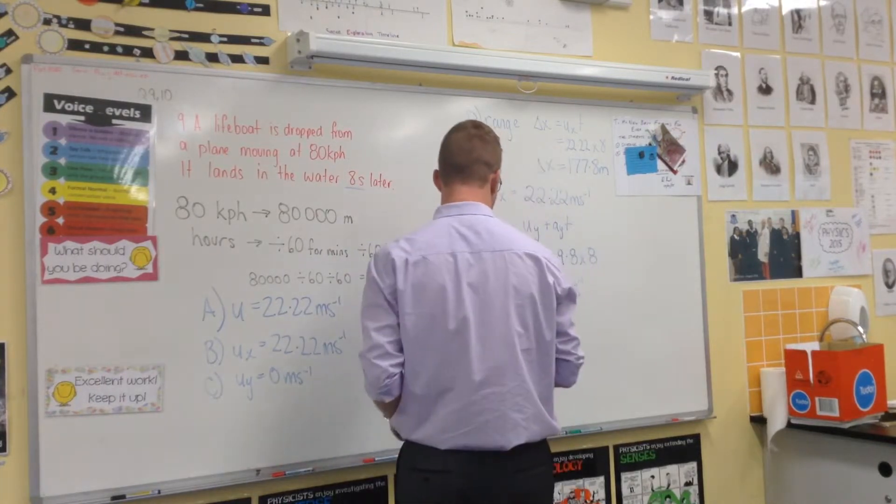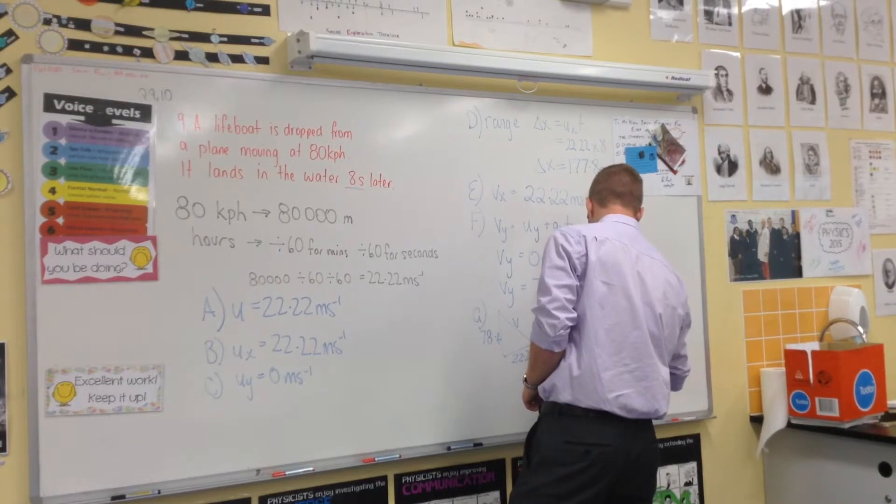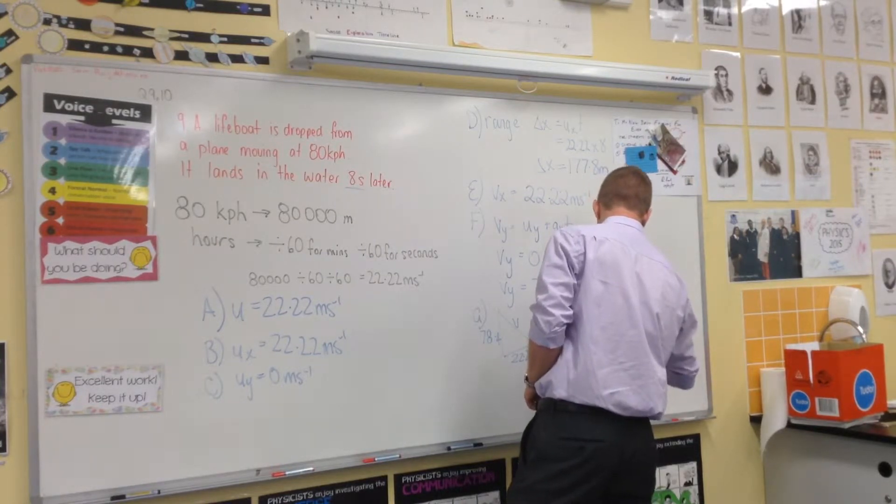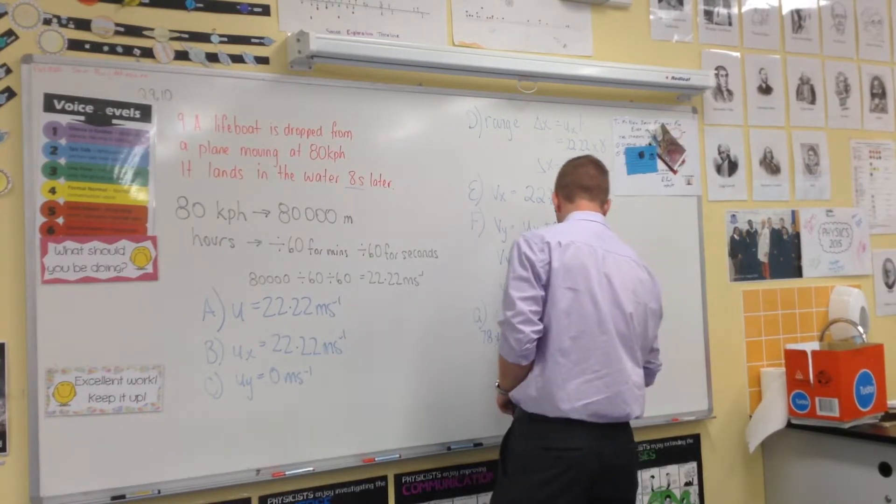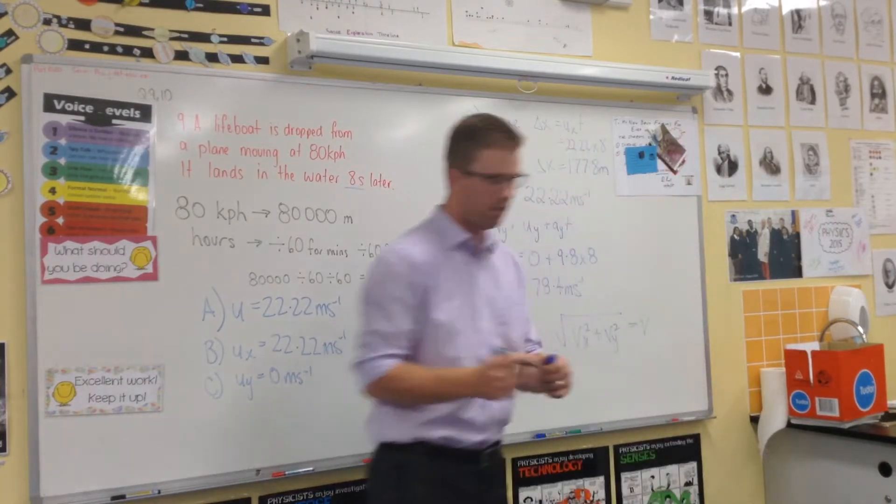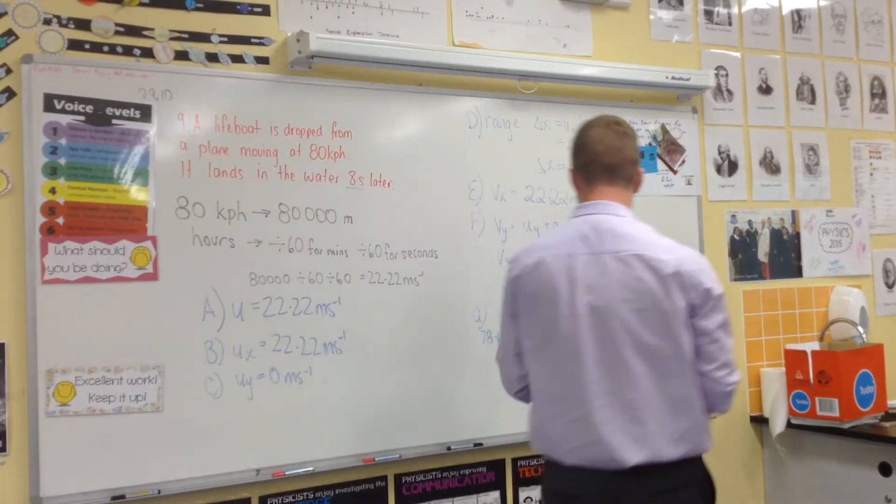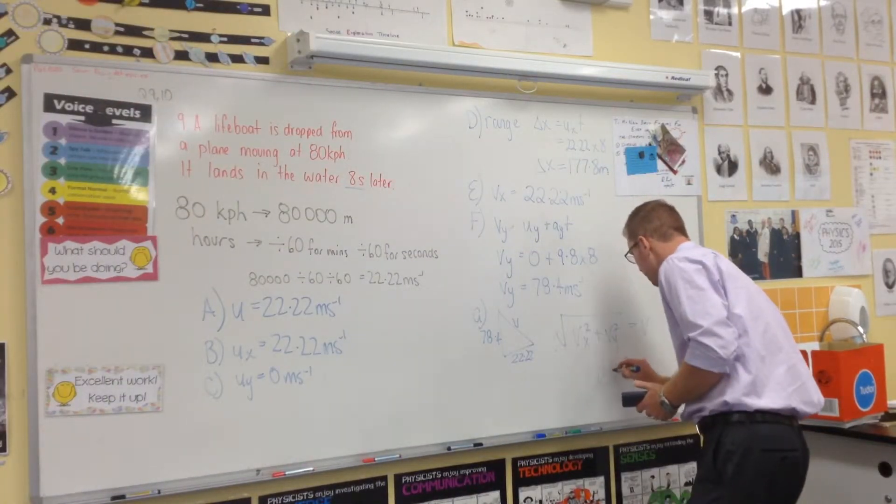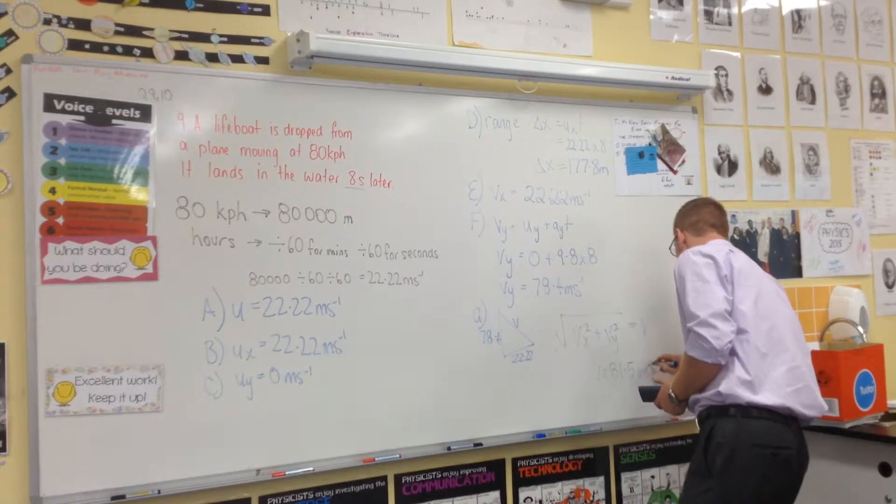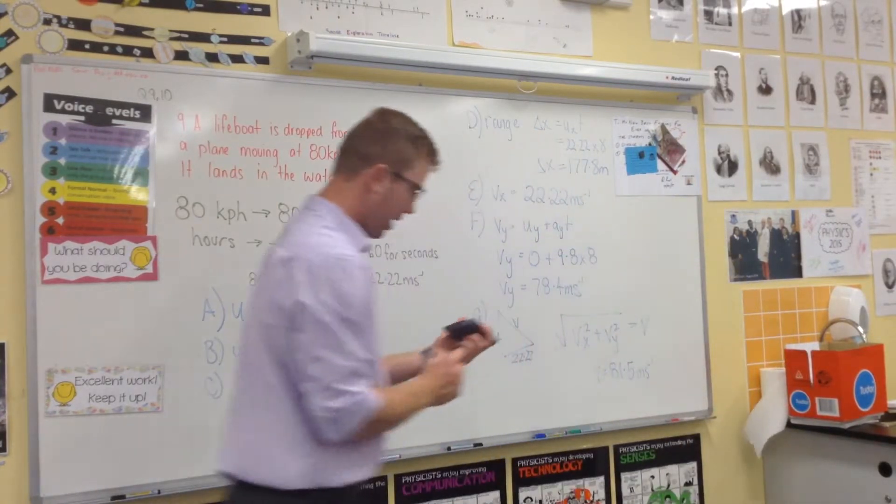So let's do that. VX squared plus VY squared will give you V. Square root of 78.4 squared plus 22.22 squared—you're going to get 81.5. Is that what you've roughly got? Yep. So V equals 81.5 meters per second. So that's G.